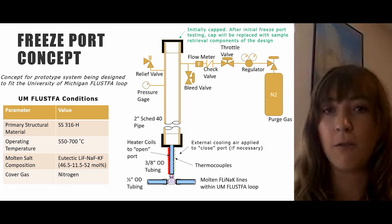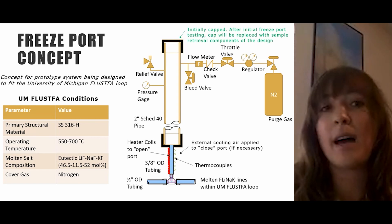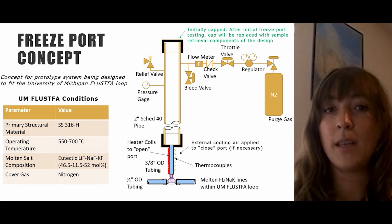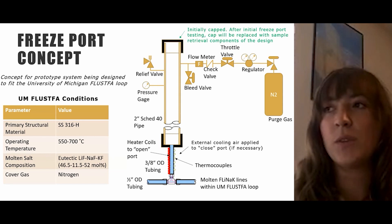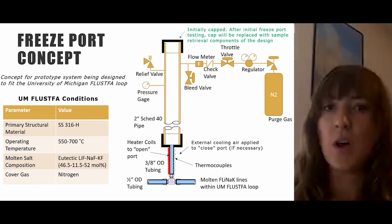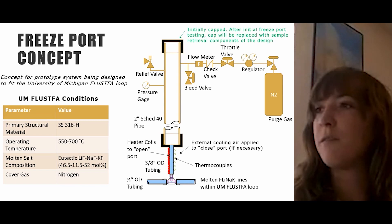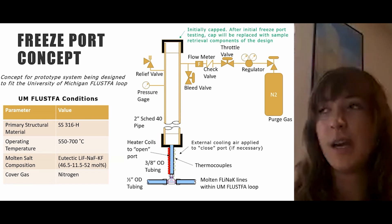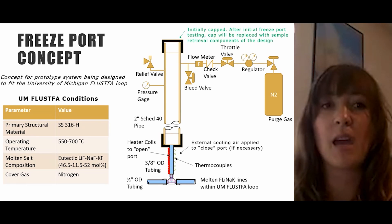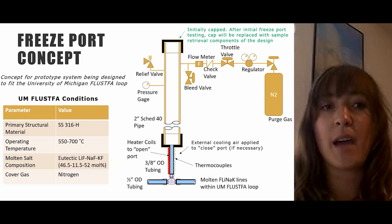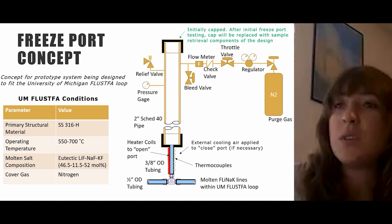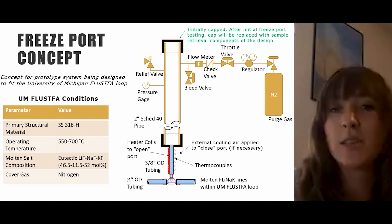Shown here is our schematic of what we're calling a freeze port concept, which we believe will provide a reliable means of accessing the salt below in the flowing FLINAC lines of the FLUSFA loop, or in the primary salt of a solid-fueled MSR, or the fuel salt in a liquid-fueled MSR. This concept draws from the freeze valve concept used within the MSRE, in which a frozen salt plug was used in place of a mechanical valve in the drain lines. However, instead of draining salt from the reactor core for safe shutdown, the frozen salt here can be melted using external heaters to allow a salt collection device to pass through it and access the circulating salt below.